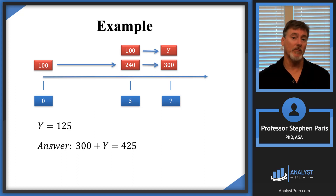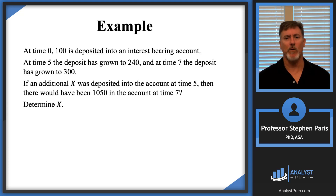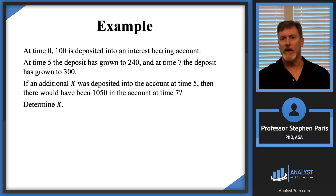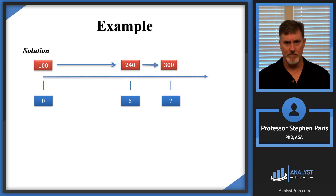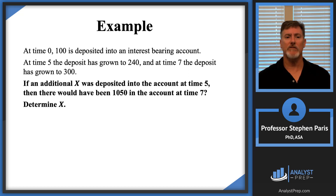Now let's twist this problem around and do a periodic discount factor problem, set up the same way. At time 0, 100 is deposited into the account; at time 5, it has grown to 240; and at time 7, it has grown to 300. Now if an additional amount cap X was deposited at time 5, there would have been 1,050 in the account at time 7. We want to determine what cap X is.